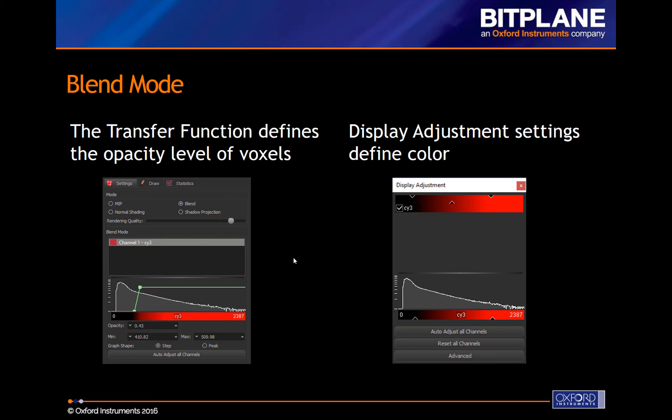Two square control points and a green line define the values of the transfer function in the histogram. You can click and drag all of these. The transfer function defines the opacity of the voxels, and the settings on the Display Adjustment window define the colors assigned to those voxels.